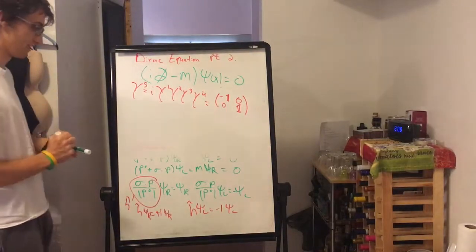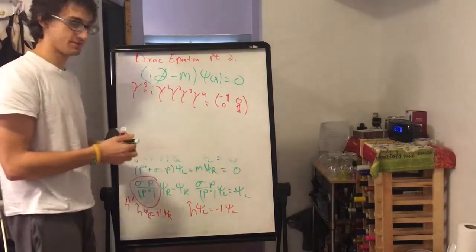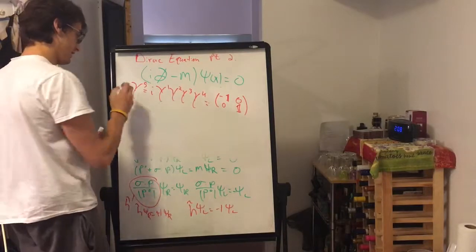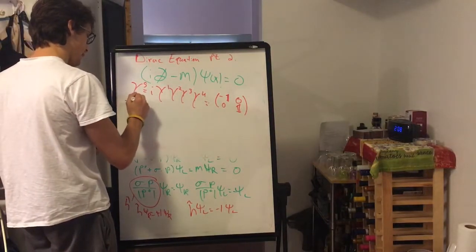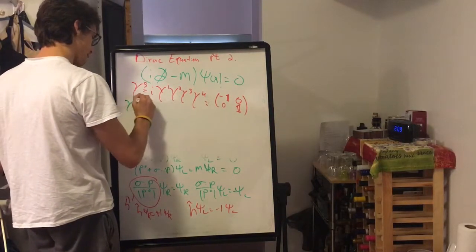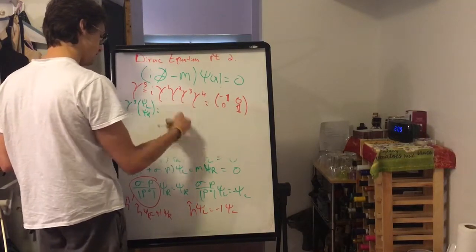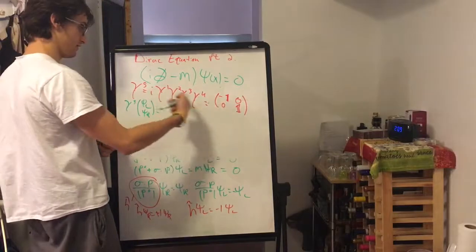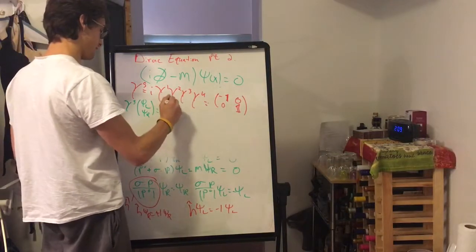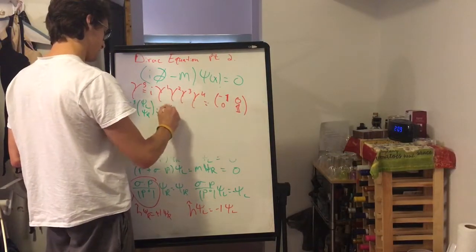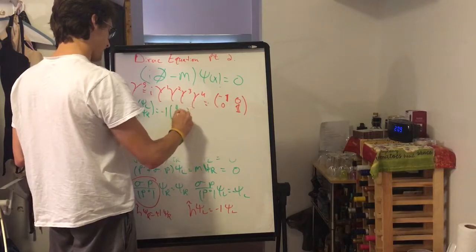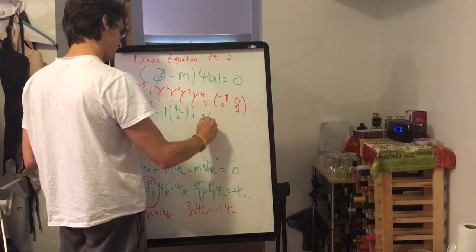And what we get is minus one, zero, zero, one. So, now we're going to act this on the state, the Dirac spinor, and then what we get is we just get whether it's right-handed. We get negative one for it being anti-parallel, and then plus one for it being parallel.